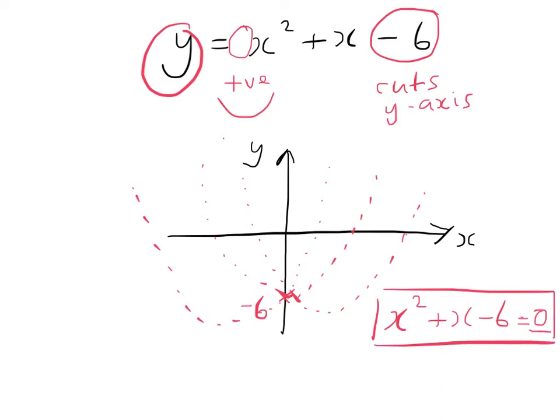We can factorise that. x minus 2 could be 0, because 0 times x plus 3 would be 0. Or x plus 3 equals 0, in which case x would be minus 3. So x equals 2 or x equals minus 3.